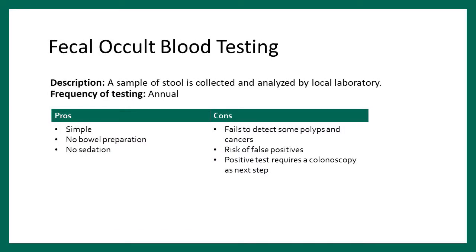The first screening method is fecal occult blood testing, called FOBT or FIT, done annually. Patients submit a stool sample to the lab — it's simple, with no bowel preparation or sedation required. However, it does fail to pick up everything; sensitivity varies widely from 10 to 80%. There's also a risk of false positives, and a positive test requires a colonoscopy follow-up.